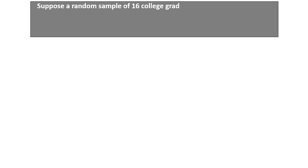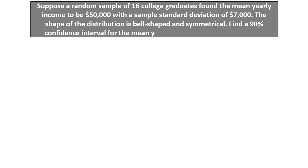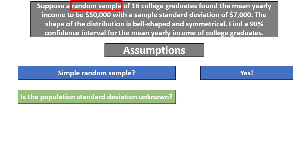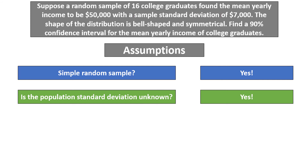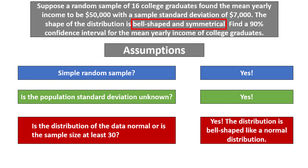Suppose a random sample of 16 college graduates found the mean yearly income to be $50,000, with a sample standard deviation of $7,000. The shape of the distribution is bell-shaped and symmetrical. Find a 90% confidence interval for the mean yearly income of college graduates. We check our assumptions: we have a simple random sample, the population standard deviation is unknown, and although the sample size is not at least 30, the distribution is stated to be bell-shaped like a normal distribution. We have met all three assumptions, so we can move forward.